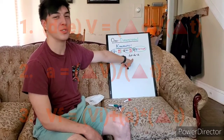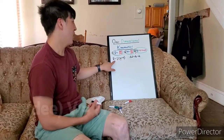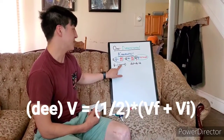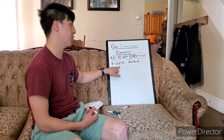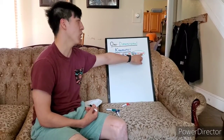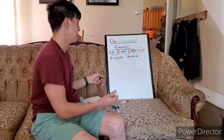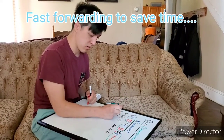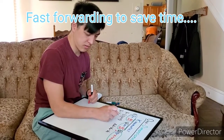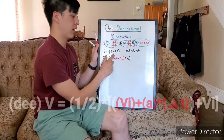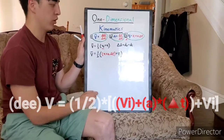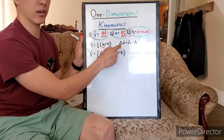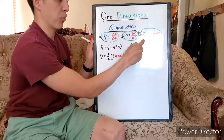We're going to use these two formulas to figure out one more. We have average velocity equals one-half times (final velocity plus initial velocity). What we're going to do is substitute VF with the VF formula we just derived — so all of that goes right in there. Then we're going to break down delta D using that substituted form.